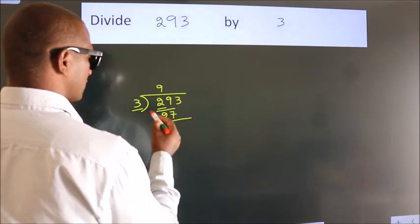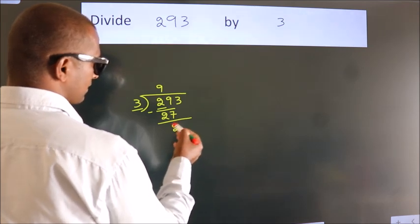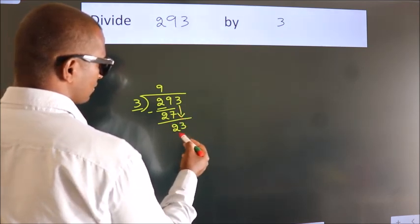Now we should subtract. We get 2. After this, bring down the beside number. So 3 down. So 23.